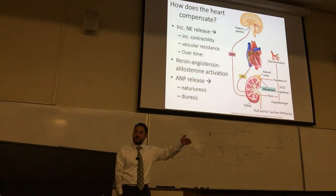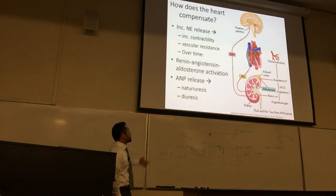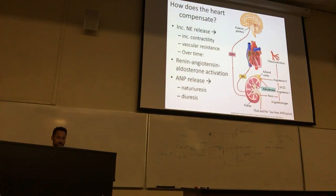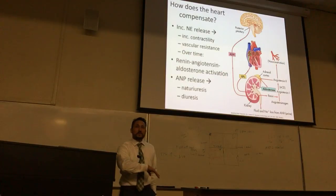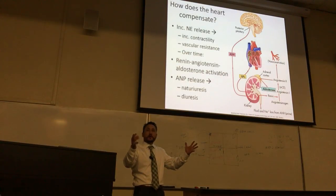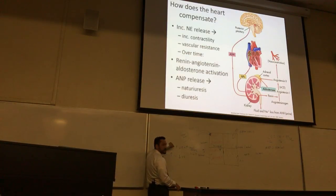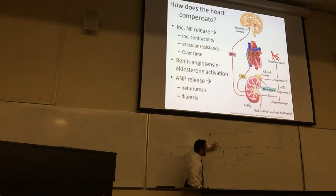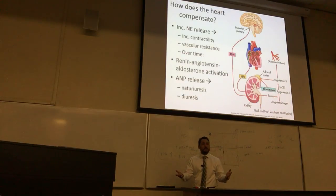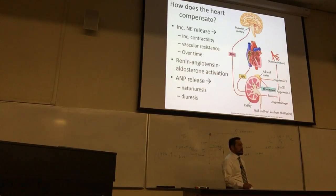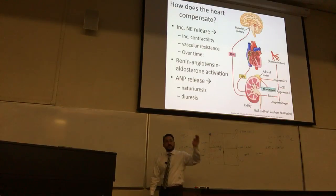That volume first increases venous return, so as venous return increases you get more filling, greater contractility, and more cardiac output. But if you have a high blood volume you also raise blood pressure, and so weeks to months after that compensatory mechanism you have an increase in afterload — mean arterial pressure — and now you're right back to the vicious cycle where you started.